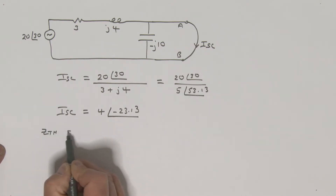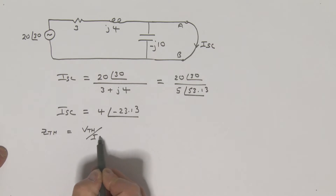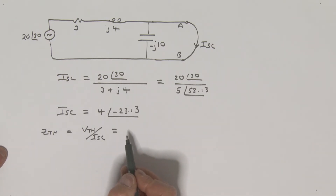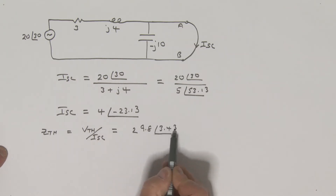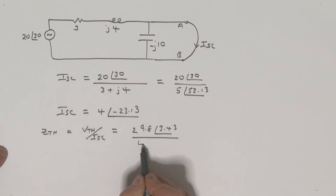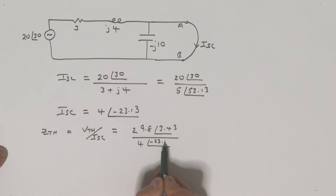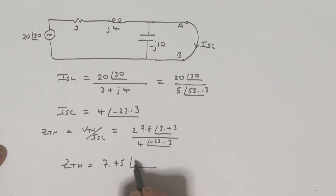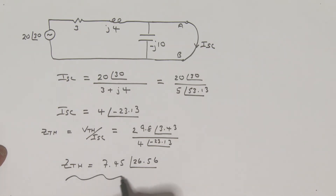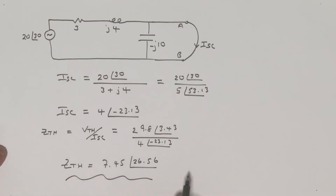The Thevenin impedance is equal to the Thevenin voltage divided by the short circuit current. We found that Thevenin voltage was 29.8 at an angle of 3.43 degrees, and we're going to divide that by the short circuit current, which is 4 at an angle of minus 23.13. Working this out, that Thevenin impedance is equal to 7.45, and my angle is 26.56 degrees. Here I'm representing the Thevenin impedance in polar form. I could convert this to rectangular form, and then consider what the resistive component is and what the reactive component is.